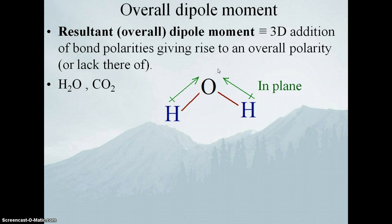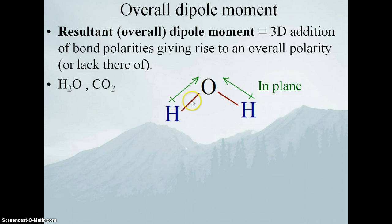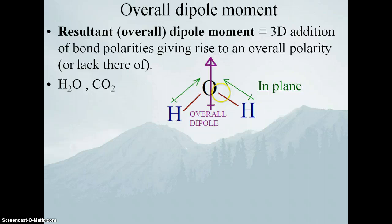A bond dipole is pushing here and pushing here. Vector addition means breaking into components. This bond dipole has a component going straight horizontally and a component going straight up. This bond dipole also has a component going horizontally and a component going straight up. The horizontal components are 180 degrees to each other, same magnitude, so they cancel out. But the upward components from both bond dipoles don't cancel out — so what we end up with is an overall dipole moment going straight up through the middle. The reason this molecule has an overall dipole moment is the angle and magnitude of those bond dipoles mean they don't cancel out.